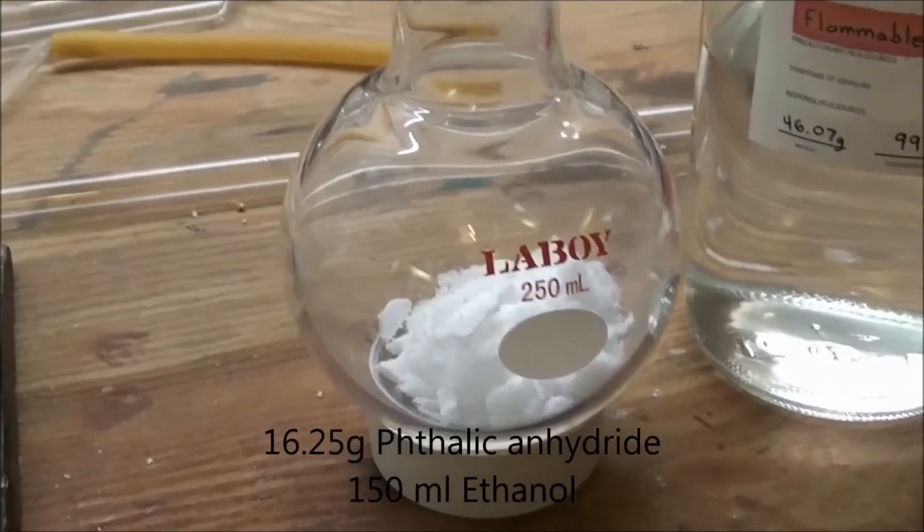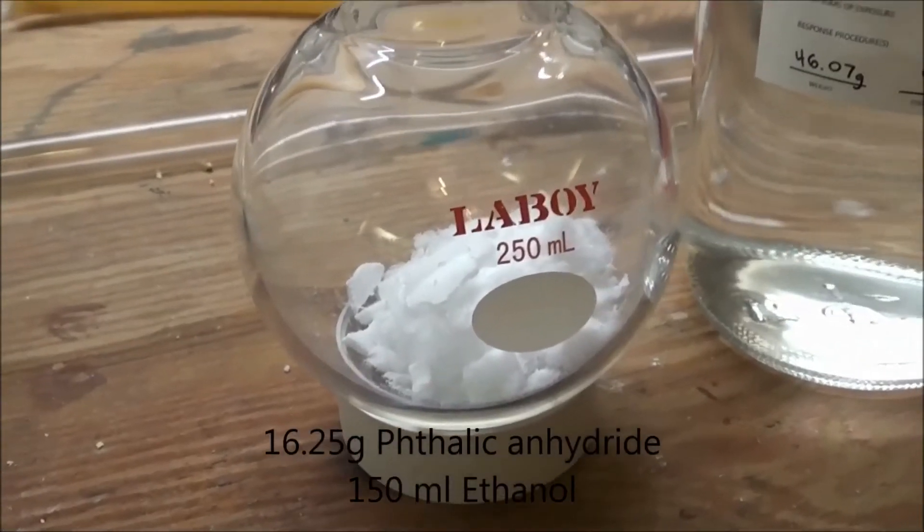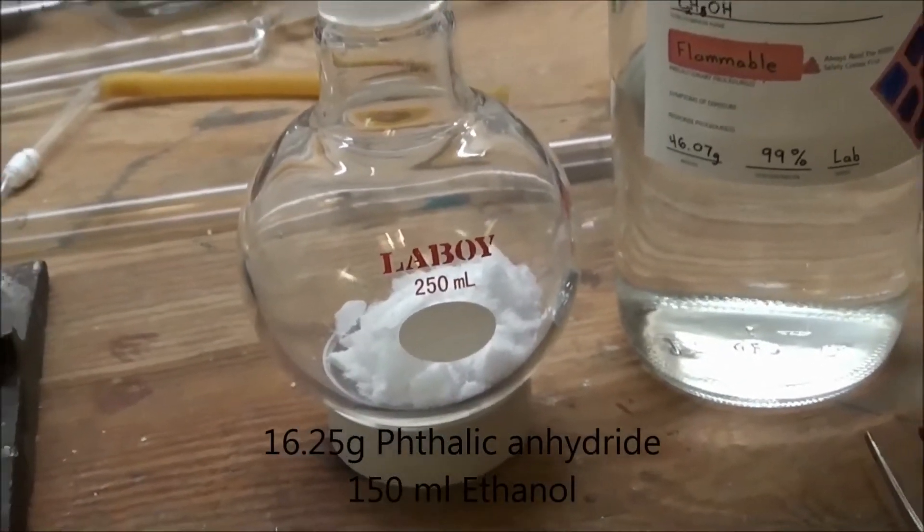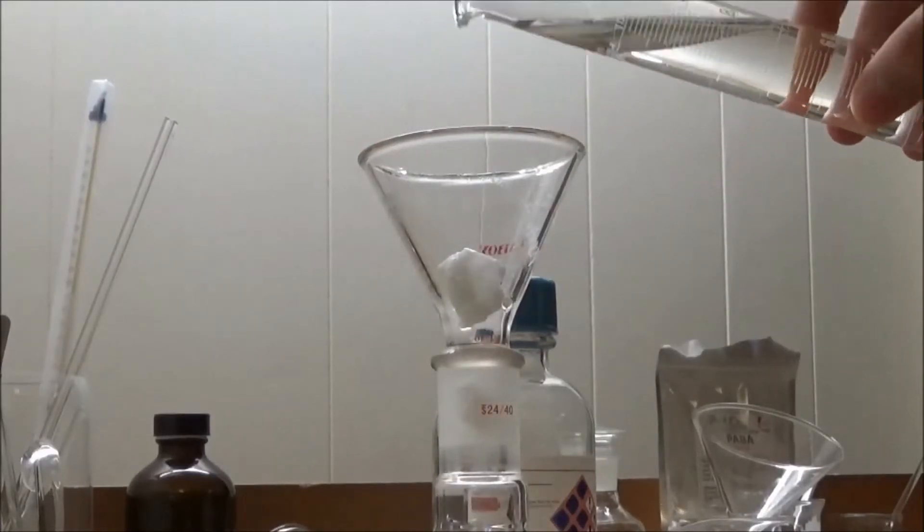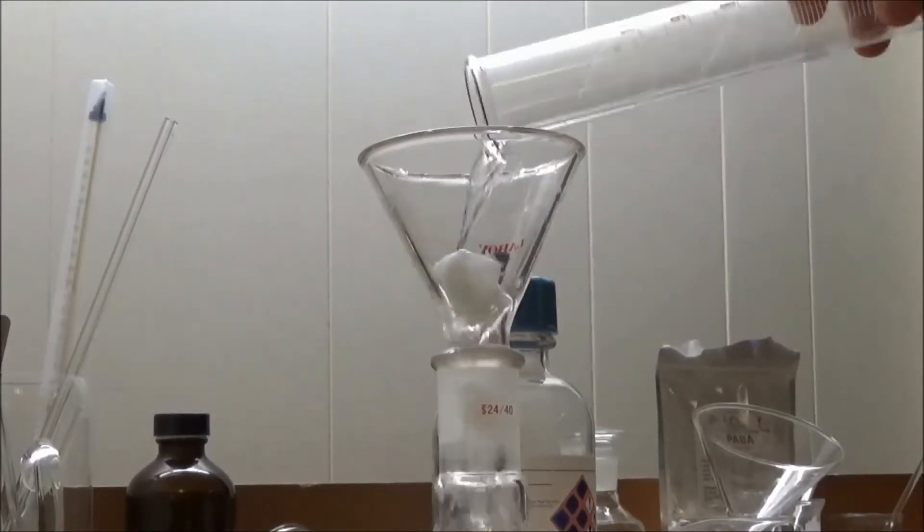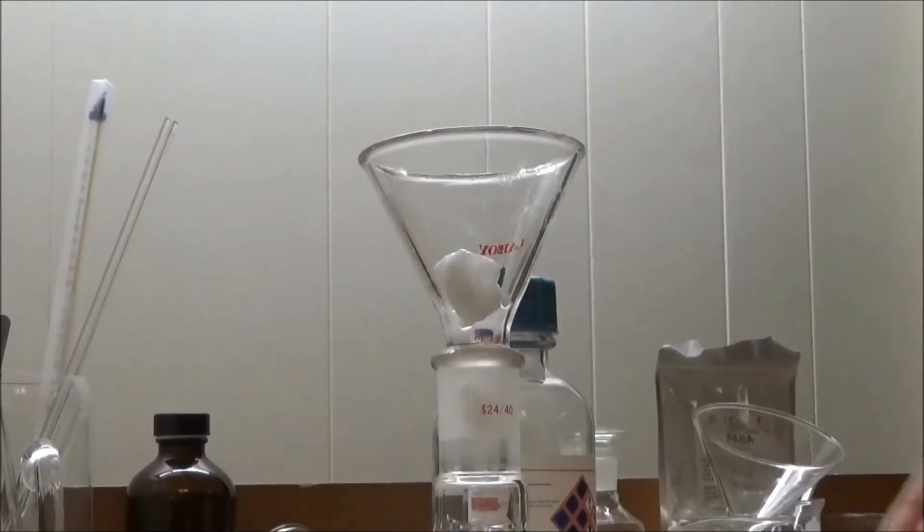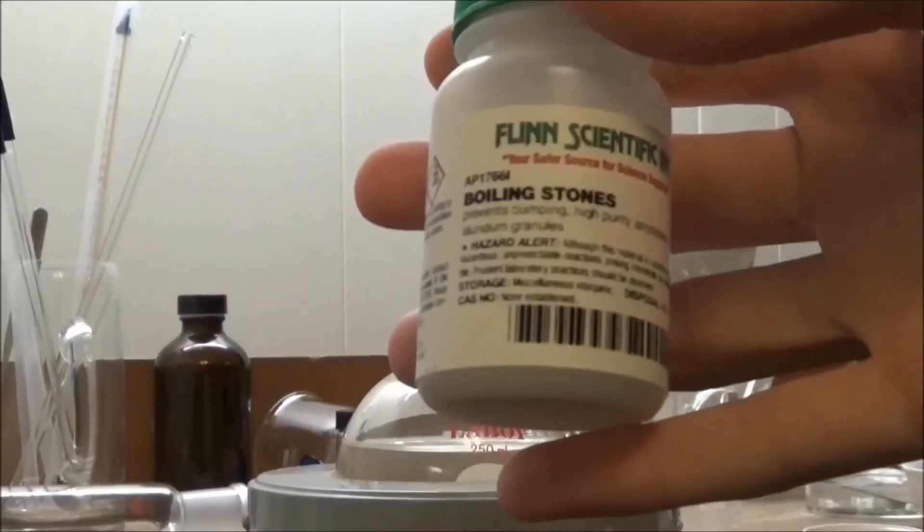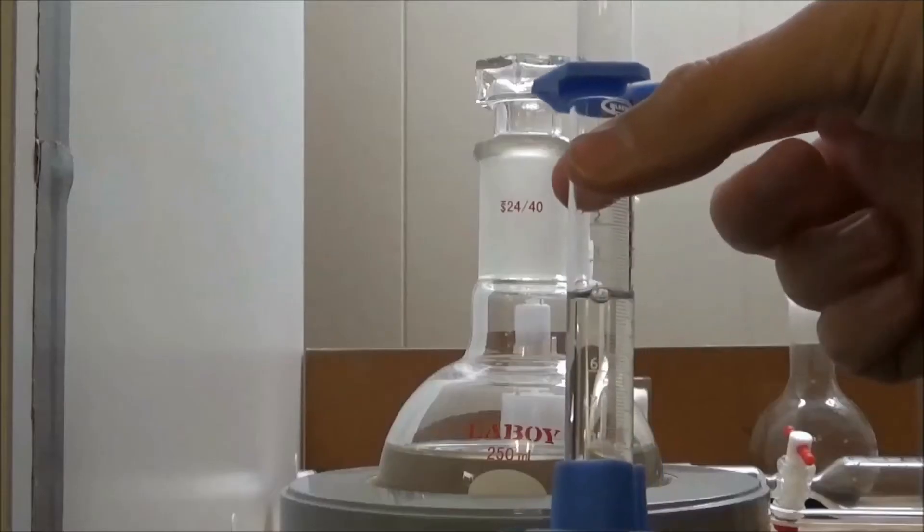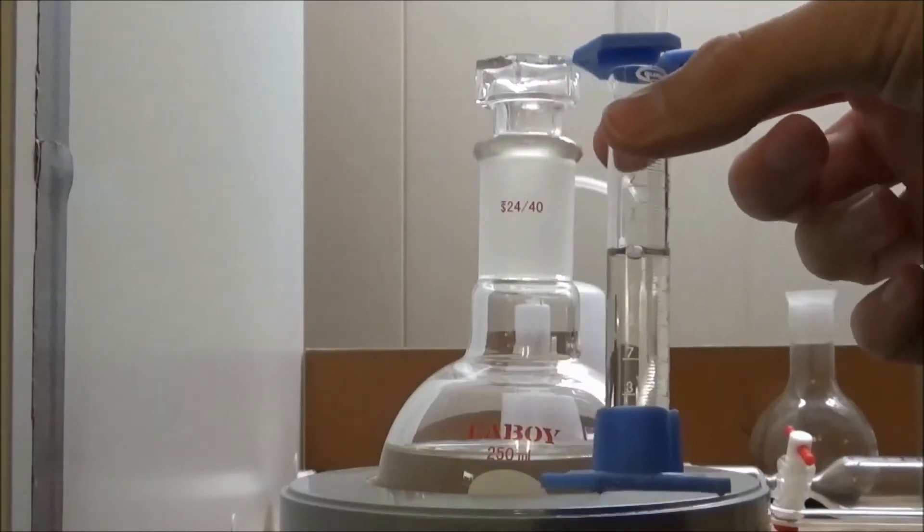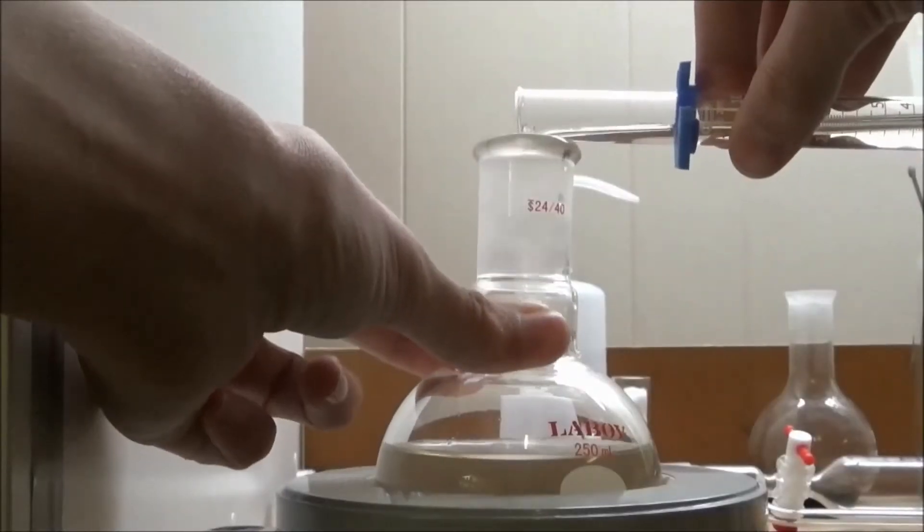First I measured out 16.25 grams of phthalic anhydride and transferred it to a 250 milliliter flask. This was followed by 150 milliliters of ethanol which was used to wash the funnel out. A boiling stone was added—a stir bar would also have been fine. Finally I added six milliliters of concentrated sulfuric acid.